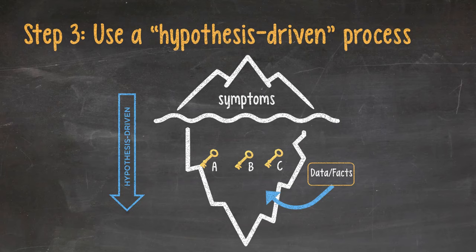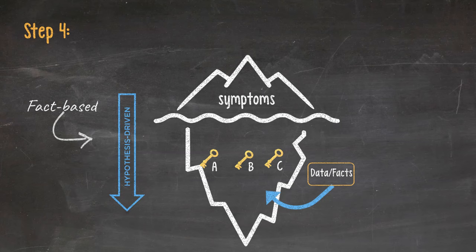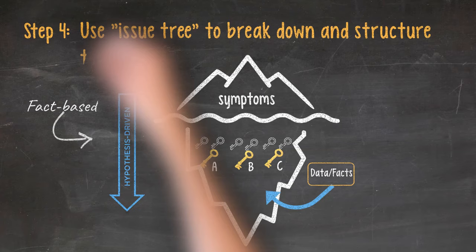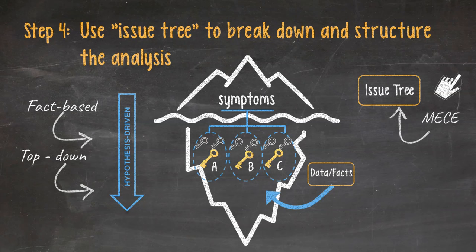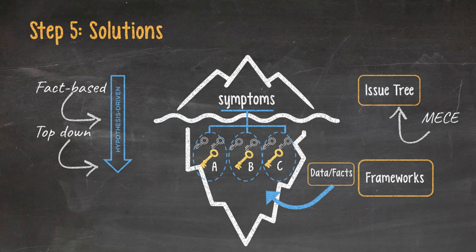Step 4. A hypothesis-driven process may take forever as there are millions of possible root causes. So we need a system called an issue tree to break down and structure the analysis. We test hypotheses from the top to the bottom of the issue tree in a top-down fashion. These issue trees need to be MISI. See this video for an in-depth explanation of what the heck that means. To do that with less hustle, we use previously developed issue tree templates, aka frameworks. Step 5. When the root causes are identified, consultants propose solutions targeting them directly.